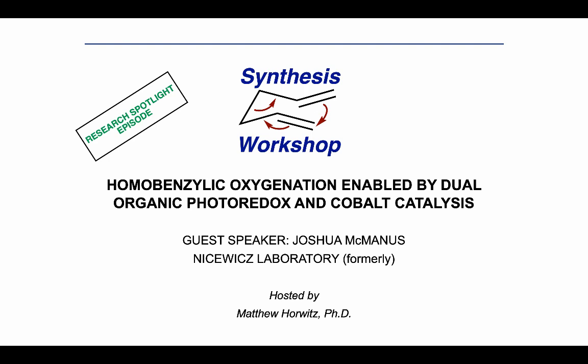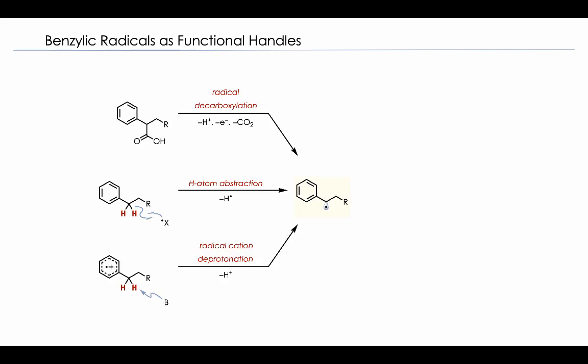So as many of you are well aware, photoredox mechanisms typically proceed via a radical-based process. And oftentimes when aromatic substrates are utilized in these reactions, we typically see formation of a benzylic radical. And this can happen through a multitude of pathways, including radical-based decarboxylations, H-atom abstraction of the labile benzylic protons, or via deprotonation of the oxidized arion radical cation.